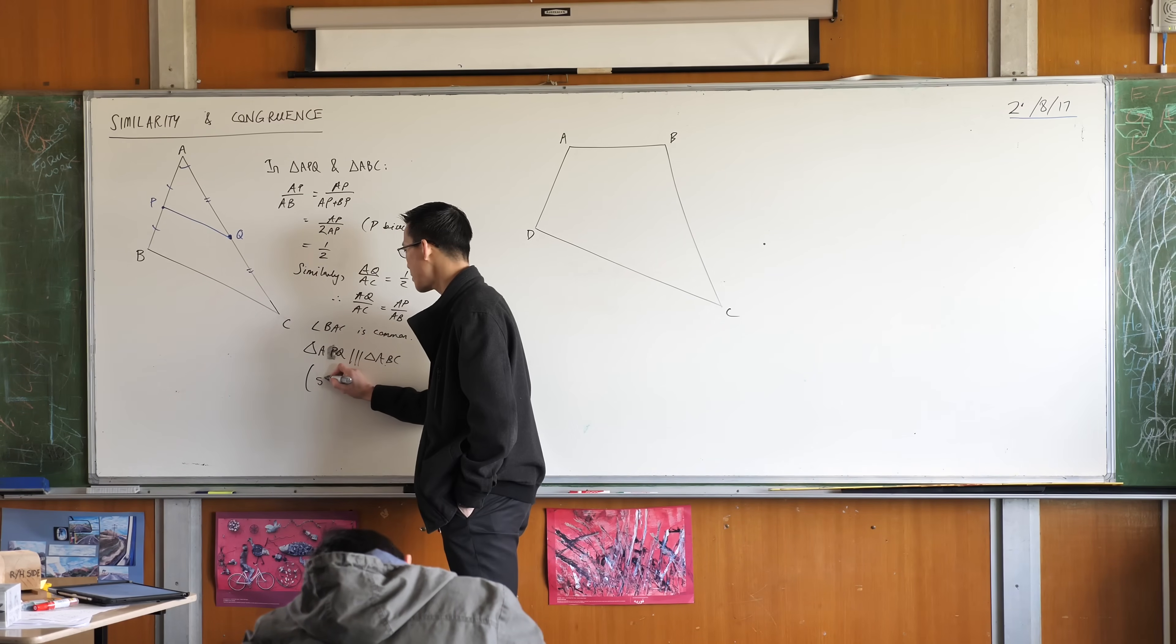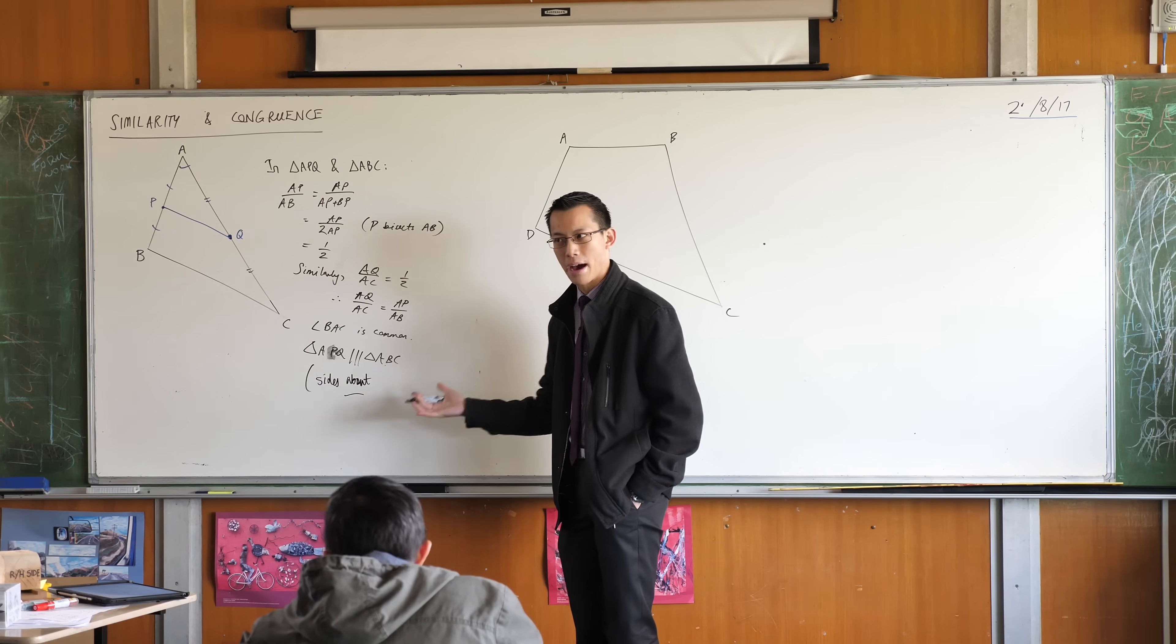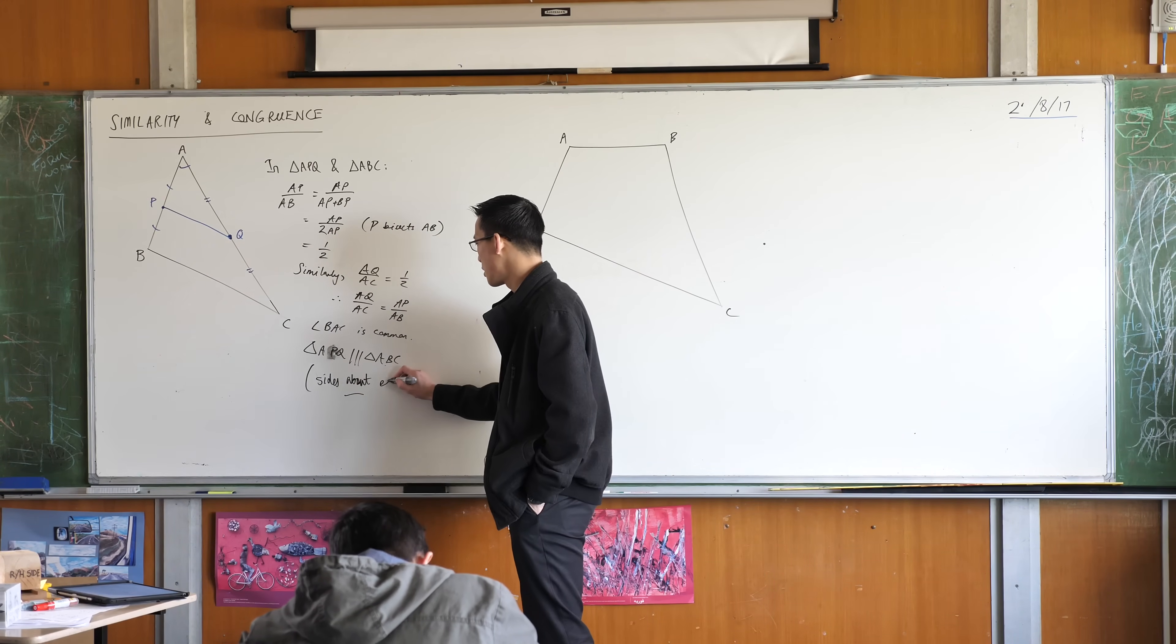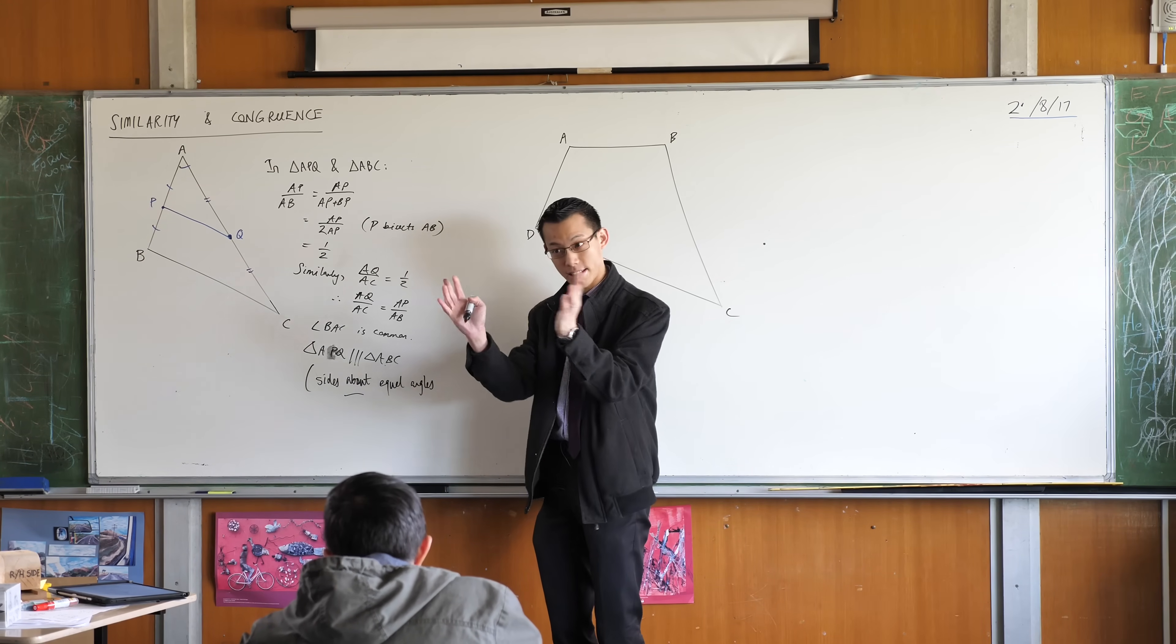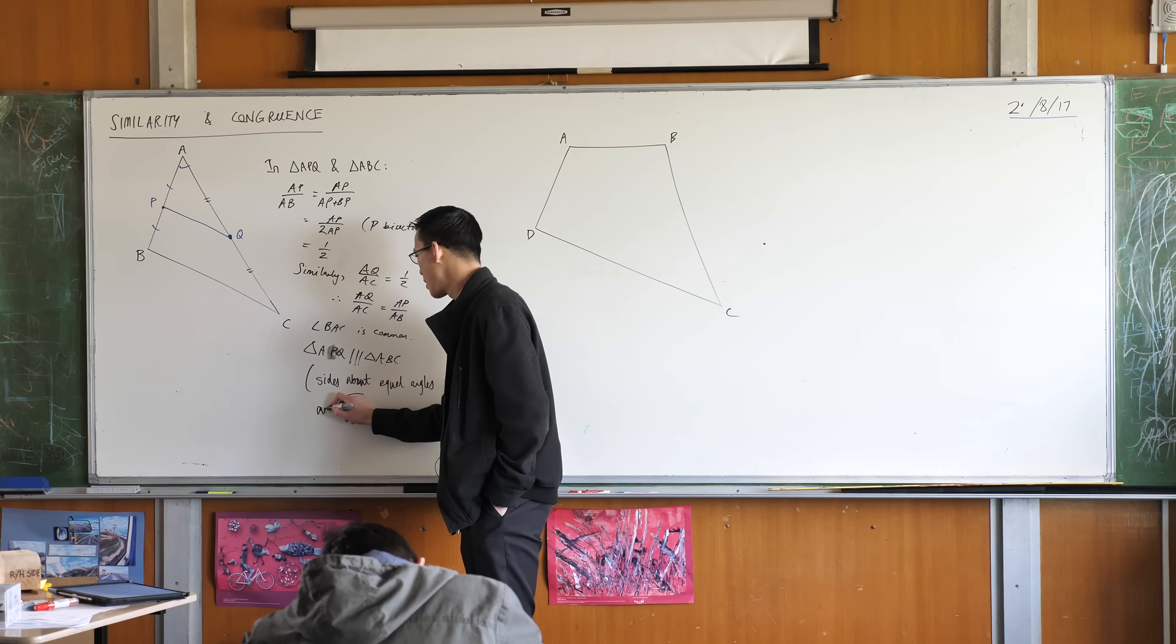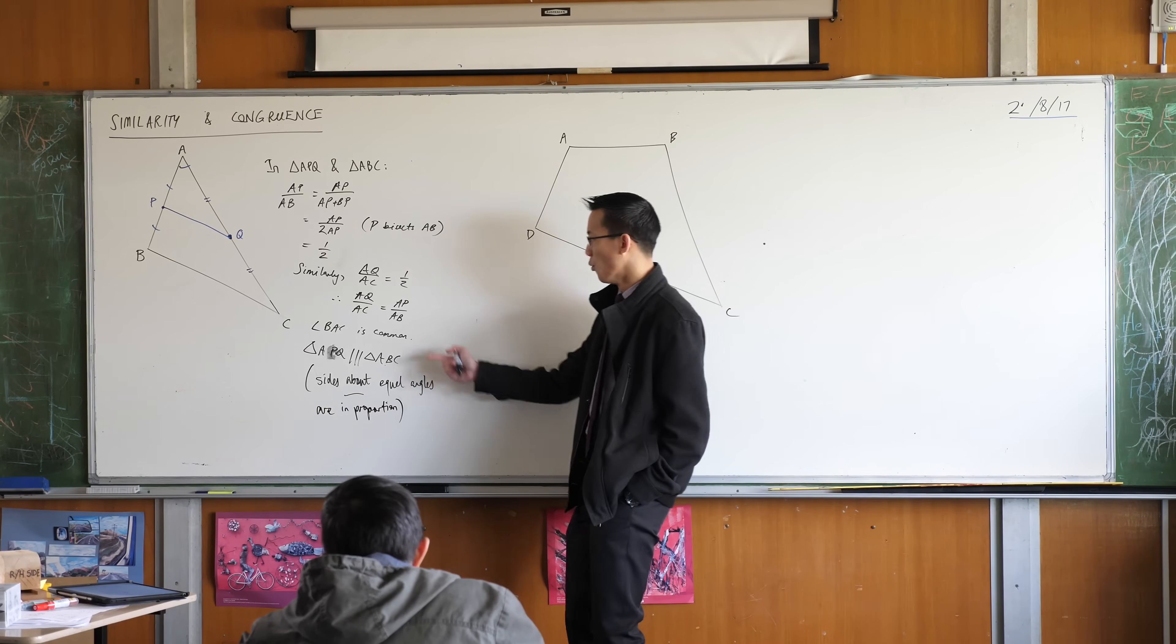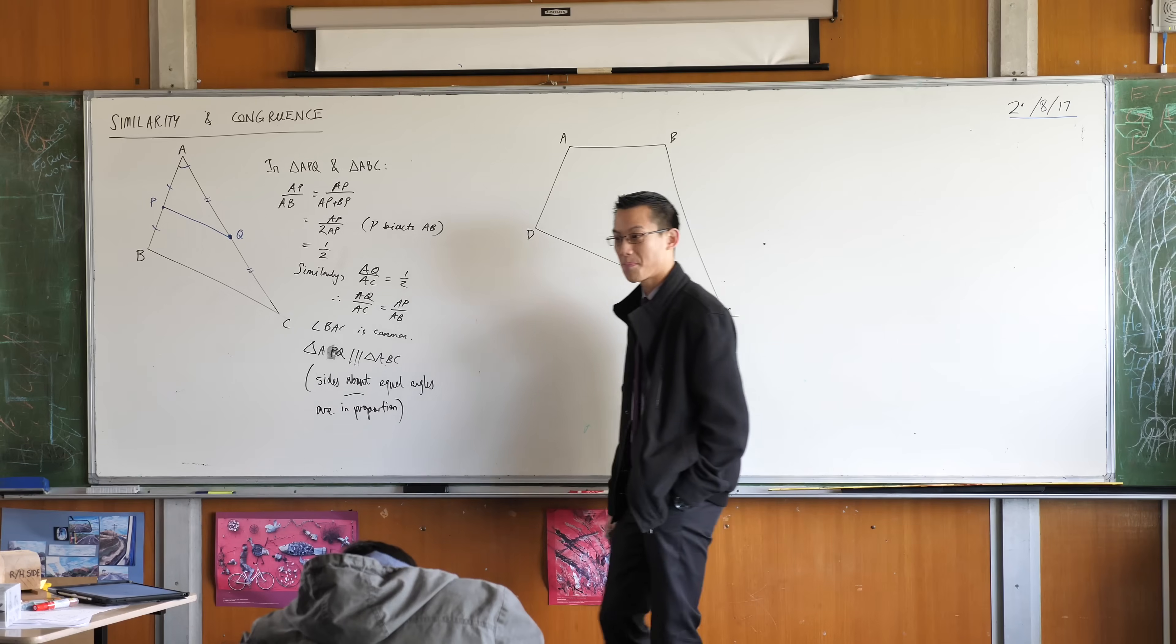So here's a nice succinct way to say it. Sides about, now that word about I'm going to underline because in mathematics about means something different, something more technical and specific. It means on either side or surrounding. So sides about equal angles, since they're about the same, they surround the same angle, they automatically correspond. Sides about equal angles are in proportion. That's it. Do you see that in seven words, I've captured everything about what I've stated here, what's equal and what's in the same ratio. You could say in the same ratio if you like, but I prefer saying one word rather than three.